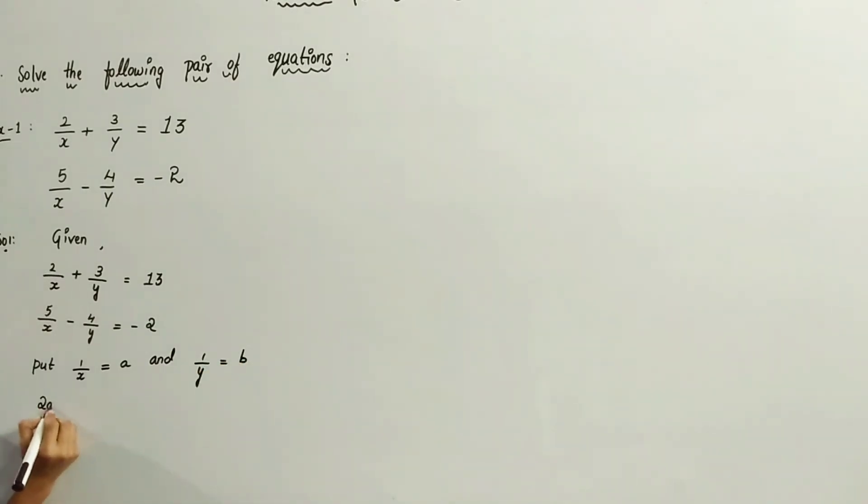Then the equations are 2a plus 3b equals 13. This is the first equation. And 5a minus 4b equals minus 2. This is the second equation.